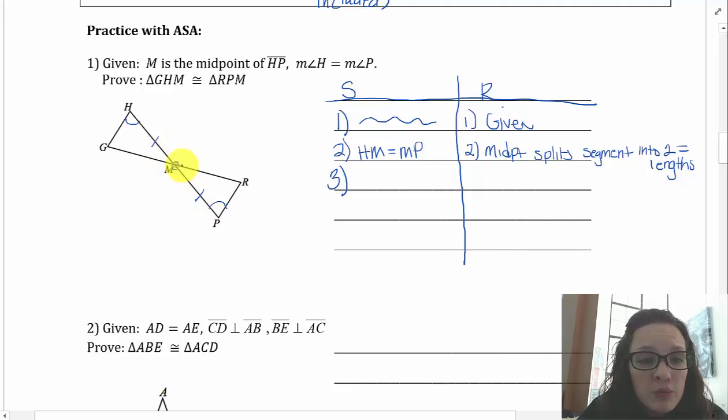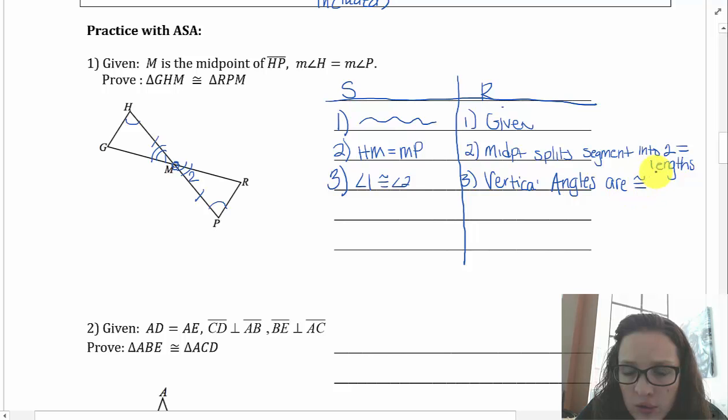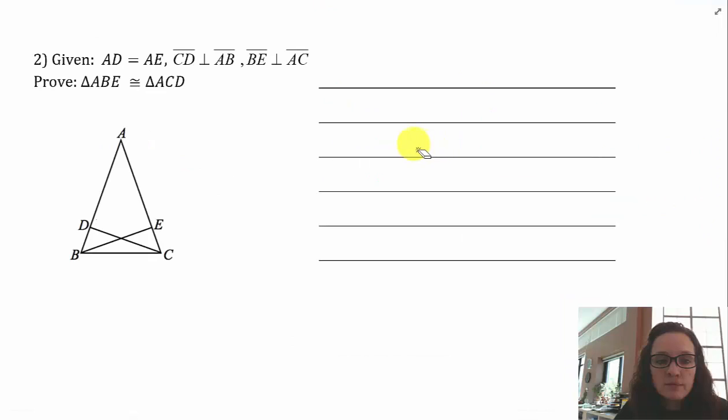So HM and MP are equal. And then the other thing that we talked about when we made our plan was, this is one of those bow tie looking things. And if it's a bow tie, I've always got vertical angles. So I'm going to call this angle one. I'm going to call that angle two and say angle one is congruent to angle two because vertical angles are congruent. And then angle, side angle. Fantastic. I have ASA so I can say what they wanted me to prove, which is triangle GHM is congruent to triangle RPM, ASA congruence.